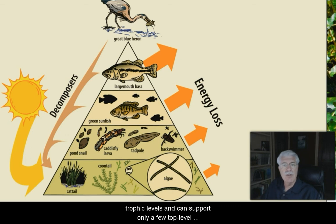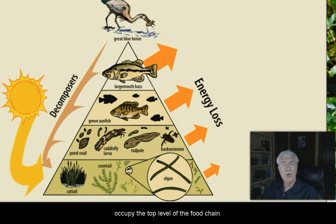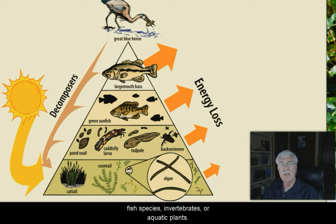In Texas reservoirs, largemouth bass and striped bass often occupy the top level of the food chain. These top-level predators are fewer in number than the smaller fish species, the invertebrates, or the aquatic plants that are in this ecosystem.